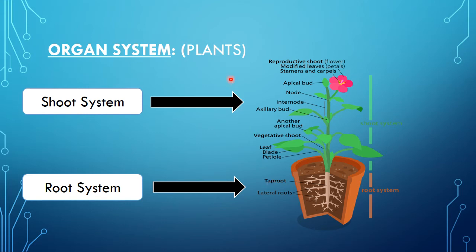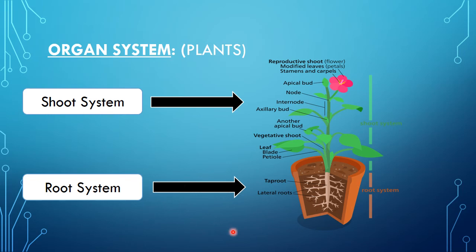Here is the organ system of plants. In plants, the organ systems are of two types: shoot system and root system. The shoot system is the system present above the soil — such as leaves, flower, and stem. The root system consists of the functions and structures which occur underground, below the soil.